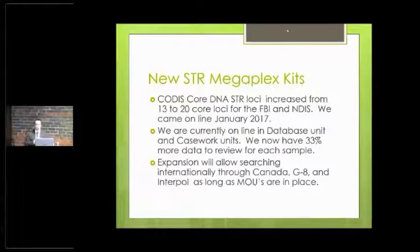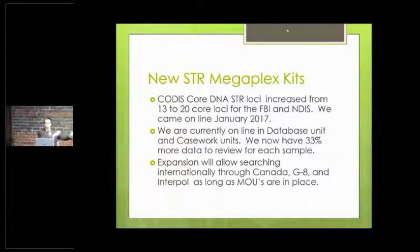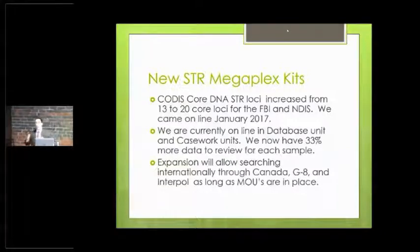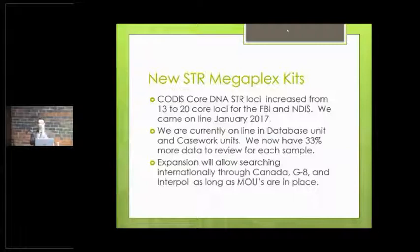Our new megaplex kit: in January 2017, we were required to go from a DNA kit that tested 13 to 20 core loci — the different segments of DNA that we're looking at. All the way since the 90s we had to look at 13 core loci; now we are up to 20. The reason for that is we want to be able to use this for international searches using Interpol. There are about 60 countries throughout the world that have CODIS software to allow this type of searching, and there are lots of rules involved — as far as MOUs with these countries, we really can do this with G8 and Western European countries right now.